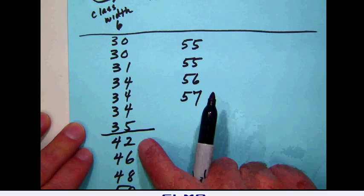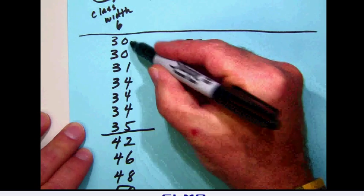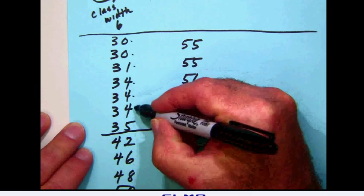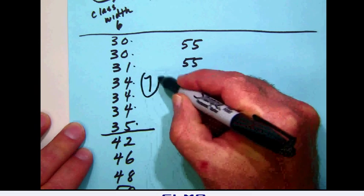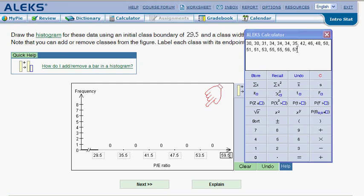That means that there are 1, 2, 3, 4, 5, 6, 7 values which are in my first class. Now going back over to Alex, we will go over here and with our cursor, the magic finger pops up, click and then drag that bar, that first histogram bar up to the number 7 and leave it there.